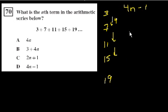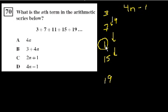And that should work out. The third term is 4 times 3, which is 12 minus 1 is 11, and that's the third term. So the answer is 4n minus 1, which is choice D.